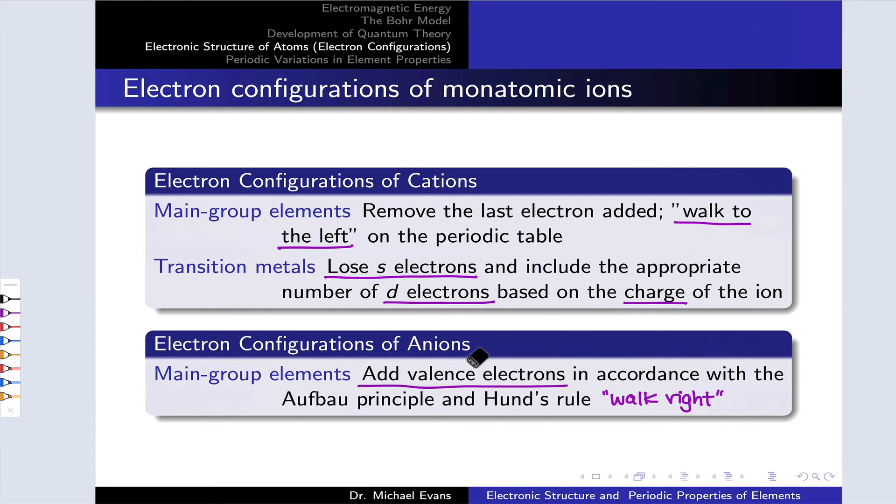The configuration of the element at that position is the configuration of that corresponding cation. I'm going to jump down to configurations of anions of the main group elements where the basic idea is very similar. We walk to the right on the periodic table the number of steps corresponding to the magnitude of the charge. So minus 1 we walk one step to the right, minus 2 we walk two steps to the right, and the configuration of the element at that position is the configuration of the corresponding anion.